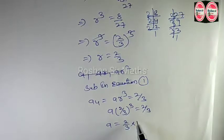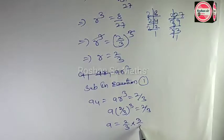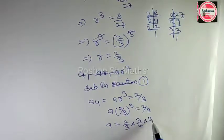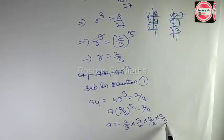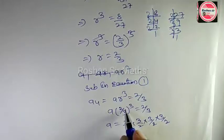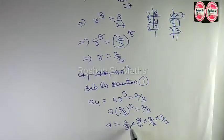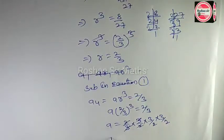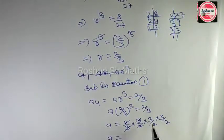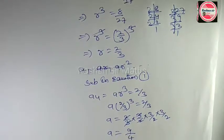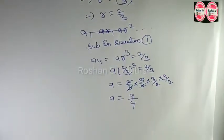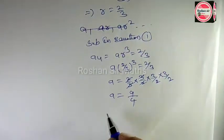इस तरफ आके उल्टा हो जाएगा — 3 by 2 power of 3. A is equal to 2 by 3 × 3 by 2 × 3 by 2 × 3 by 2. 2 cancel हो जाएगा, 3×3=9 and 2×2=4. A is equal to 9 by 4.